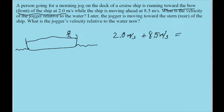Well, that is equal to 10.5 meters per second. So the jogger is moving 10.5 meters per second in the direction that the boat is moving.